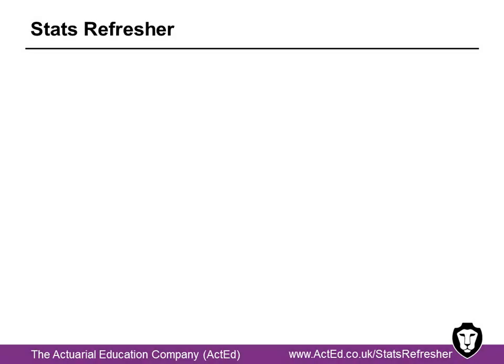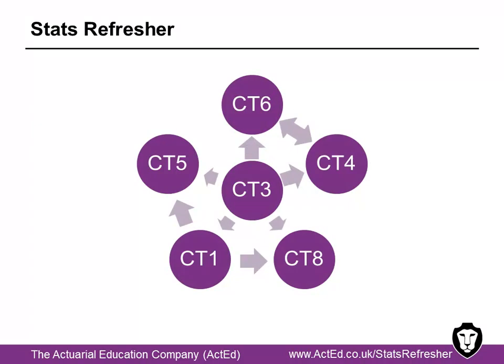Experience has shown us that many students who have a subject CT3 exemption run into trouble when studying the later CT exams, especially subjects CT4 and CT6. This is because these exams assume knowledge of statistical topics such as moment generating functions and maximum likelihood estimation. So students who studied statistics a while ago, for example in their first year of university, find they have forgotten the required level of detail and can struggle to work through some chapters of the other CT subjects.